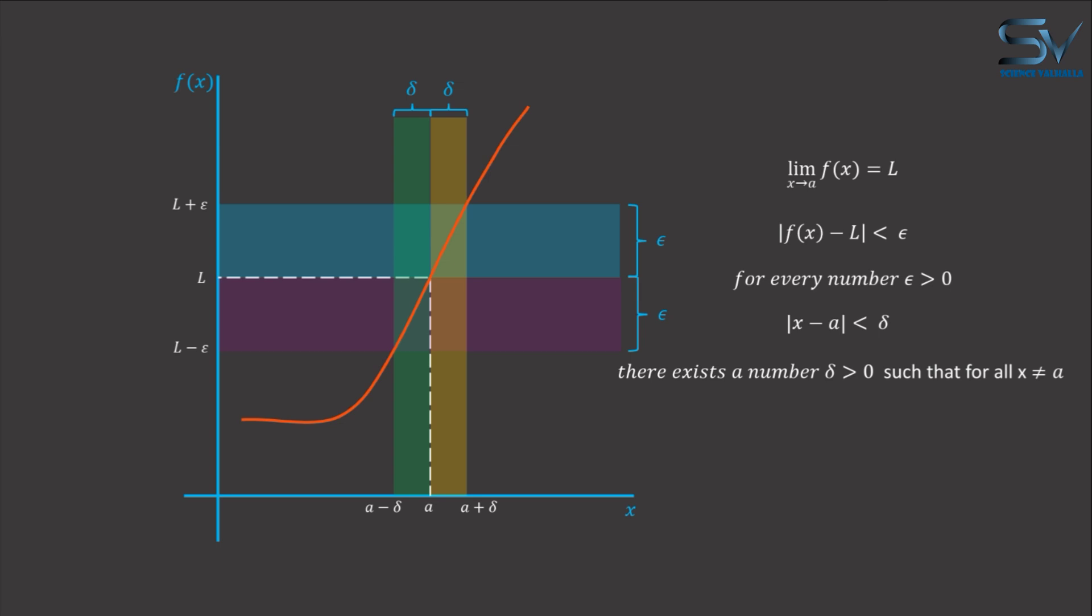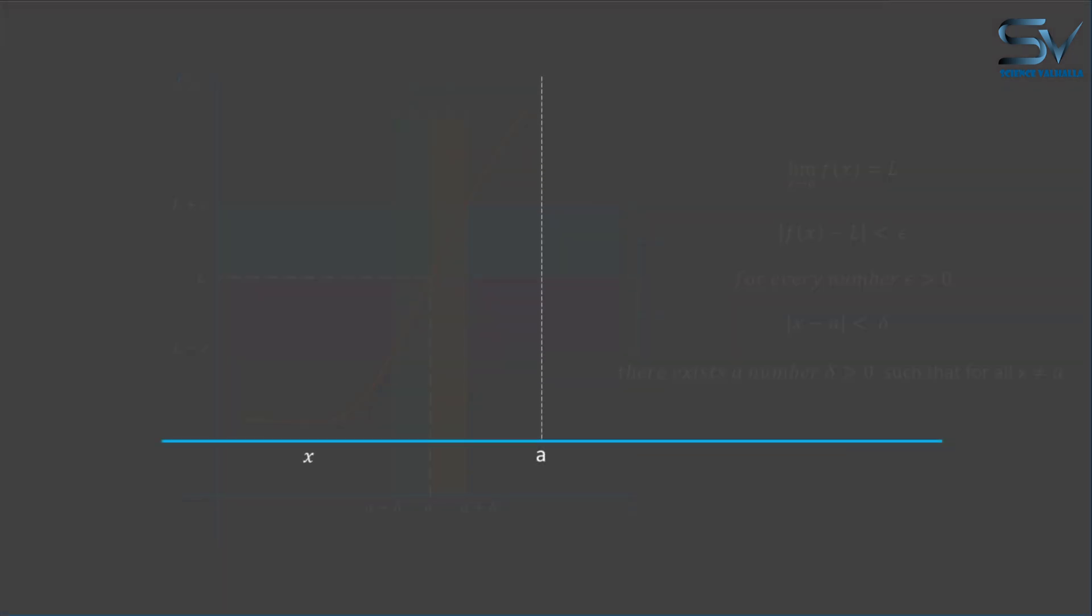Because delta exists only if there is a gap between x and a. If x becomes equal to a, there will be no gap between them, implying that delta does not exist.